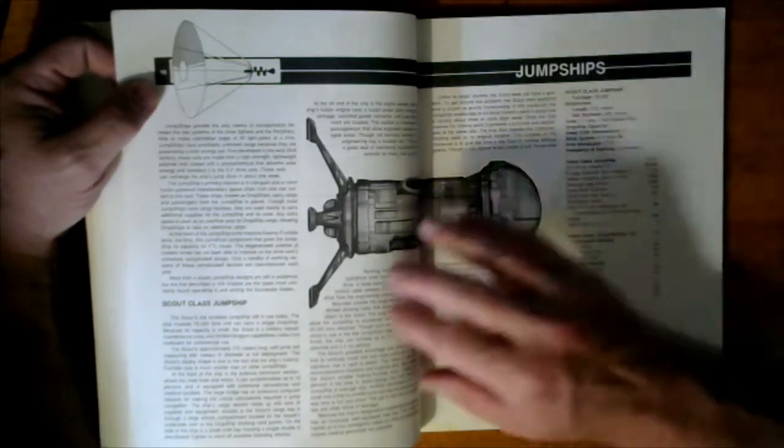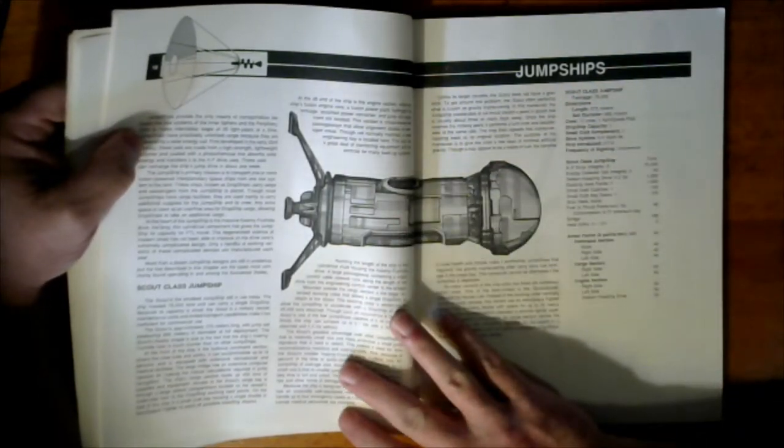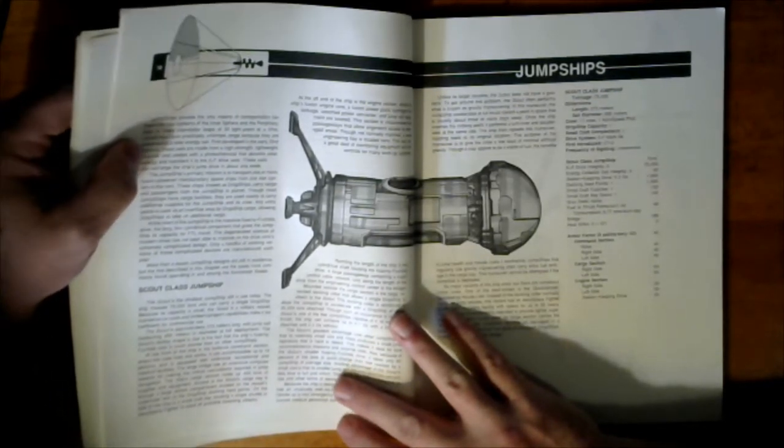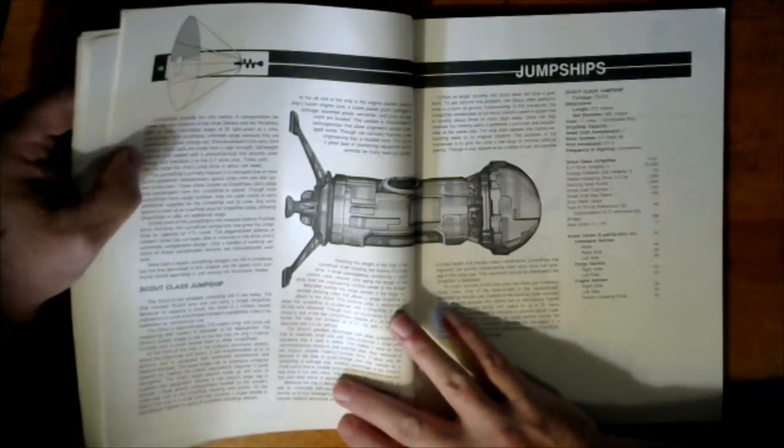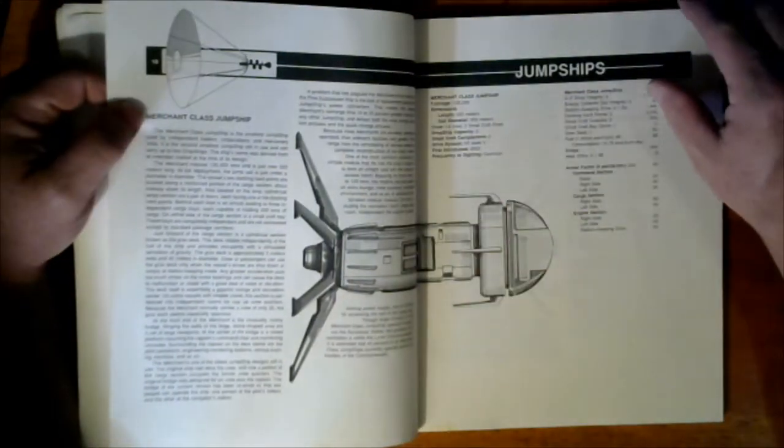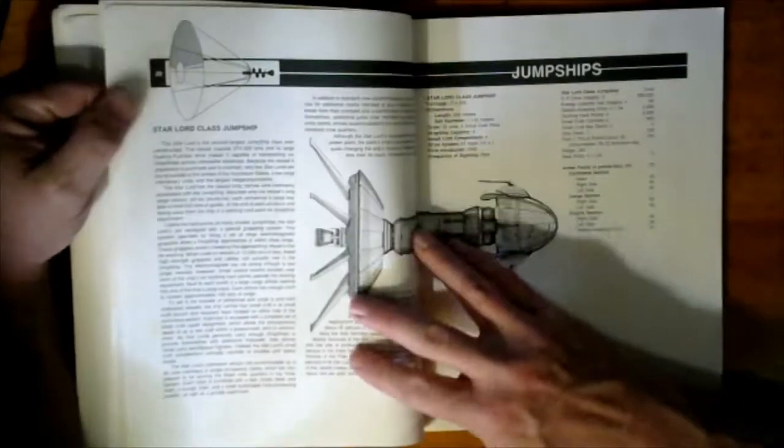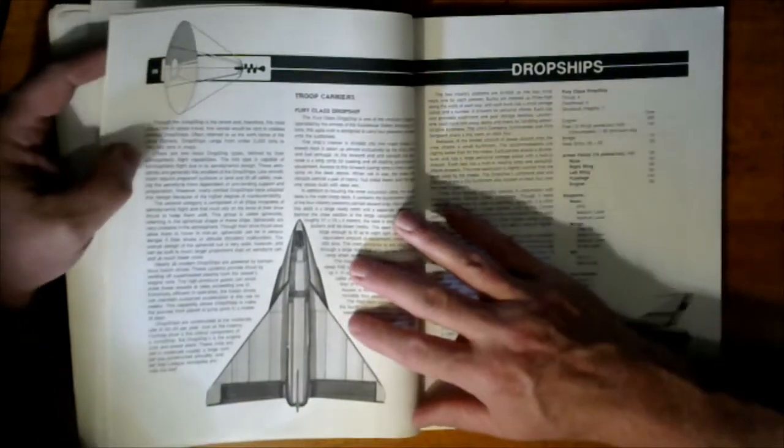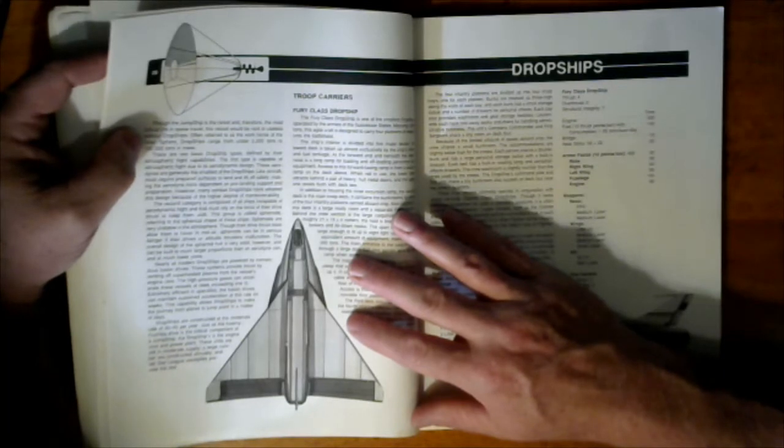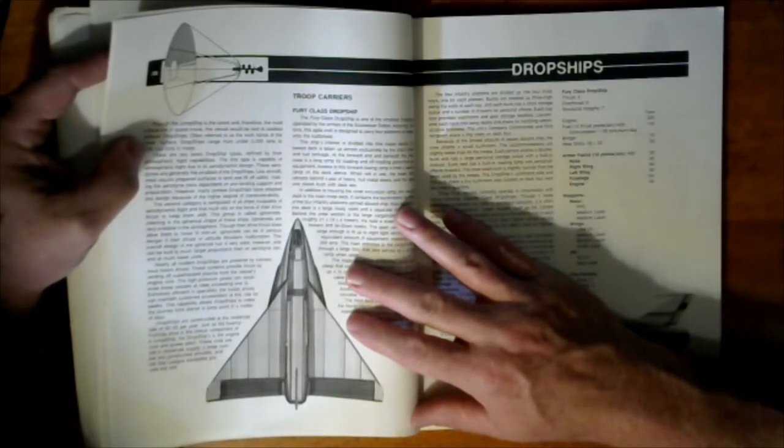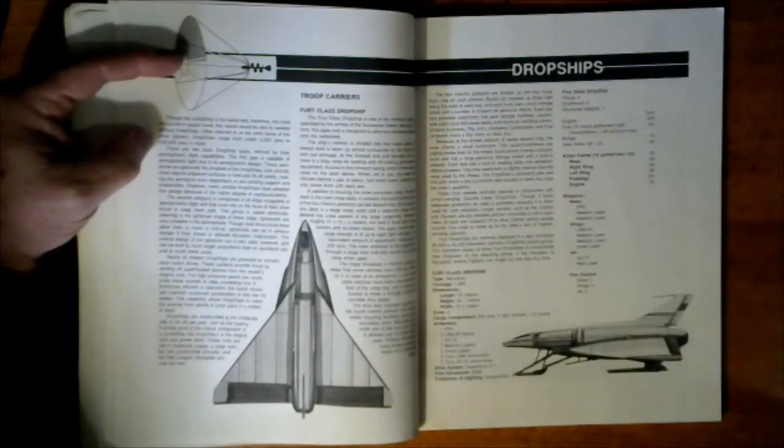Jump ships provide the only means of transportation between star systems in the inner sphere and the periphery, able to make interstellar leaps of up to 30 light years at a time. Jump ships have practically unlimited range because they're powered by solar energy sails. We have scout class, merchant class, invader class, star lord class, monolith class, and various drop ships. Jump ships are the rarest and most critical link of space travel.